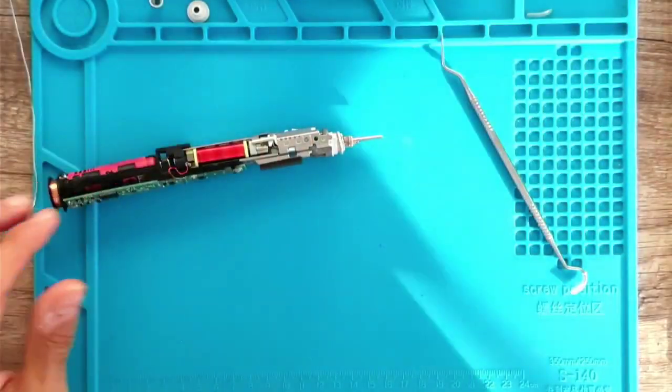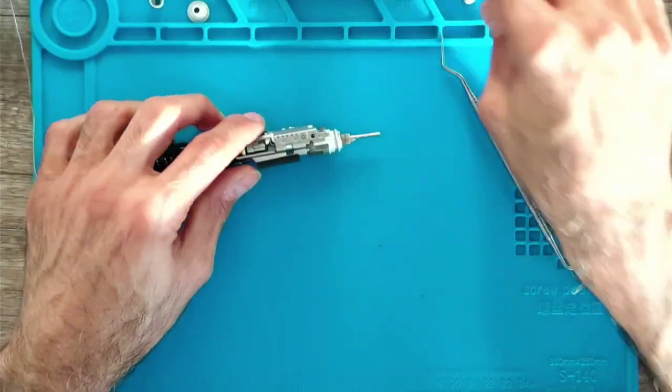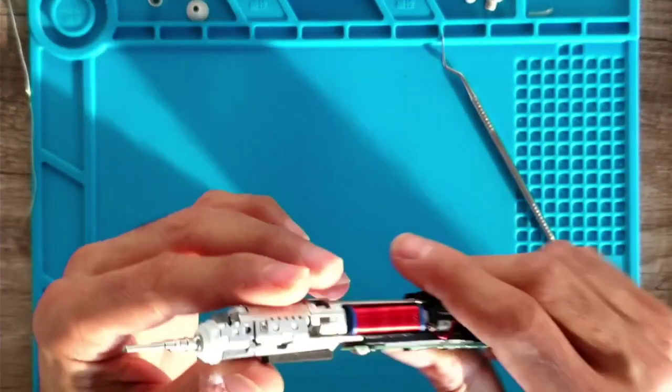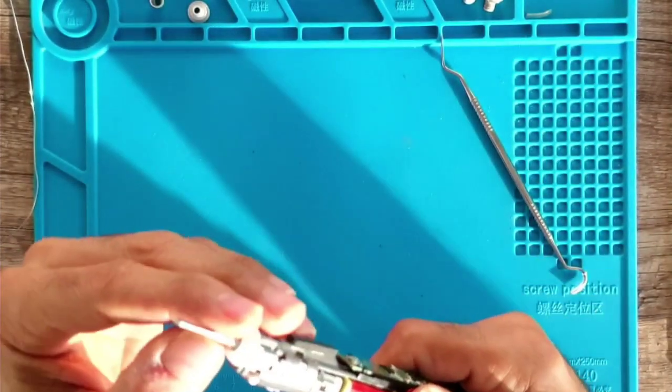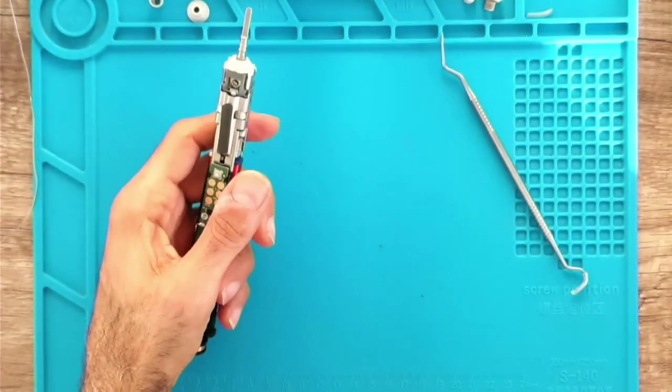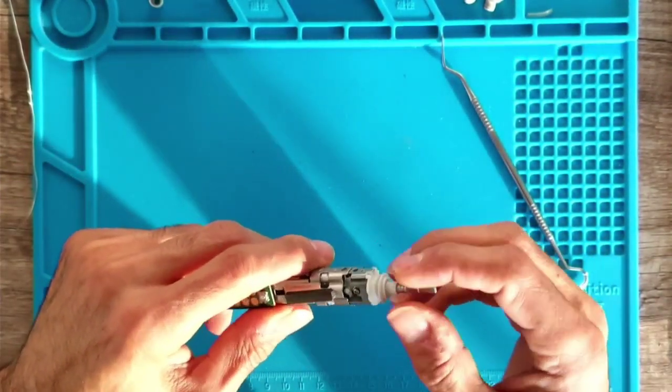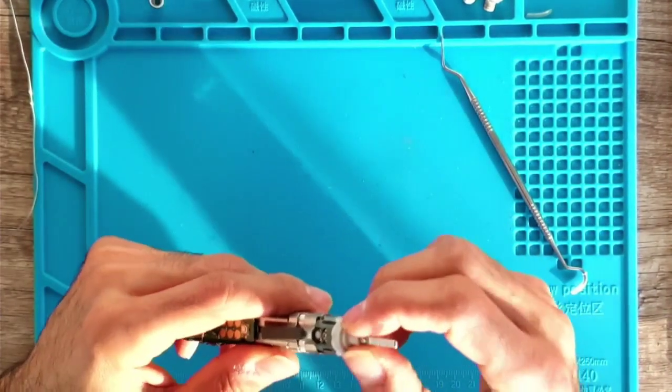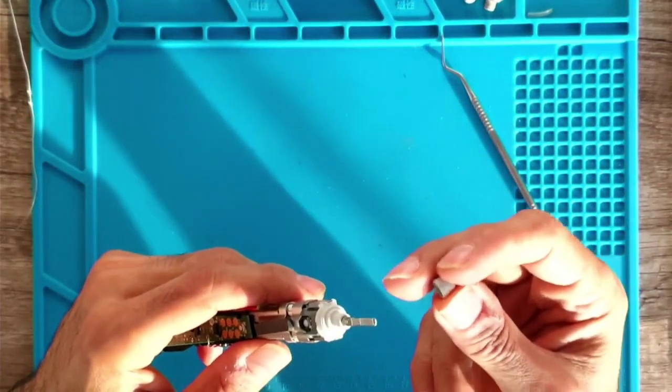Whoa, that flew halfway across the room. Okay, there we go. So this is the new seal in, and the retaining clip.